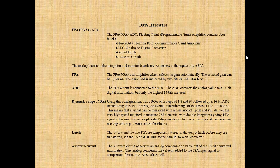This means a signal can be measured with a precision of 1 ppm, while still delivering the very high speed required to measure 768 elements with double integrators, giving 1,536 signals plus monitor values plus start/stop words for every reading, with each reading needing only approximately 750 ns. The 14 bits and the 2 FPA bits are temporarily stored in the output latch before transfer via the 16-bit ADC bus to the parallel-to-serial converter. The AutoZero circuit generates an analog compensation value from the 16-bit converted information and adds it to the FPA input signal to compensate for FPA/ADC offset drift.